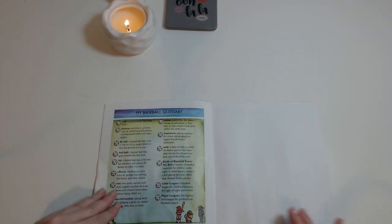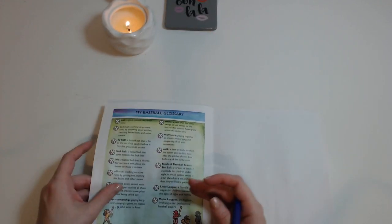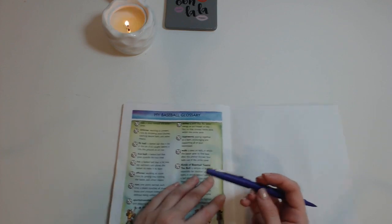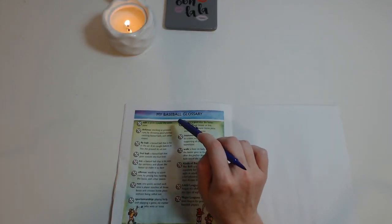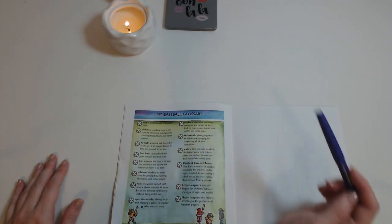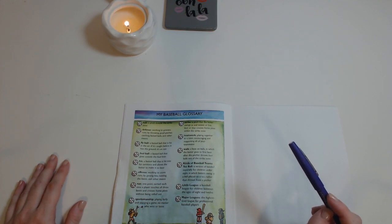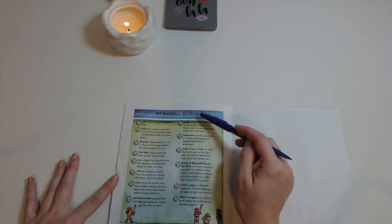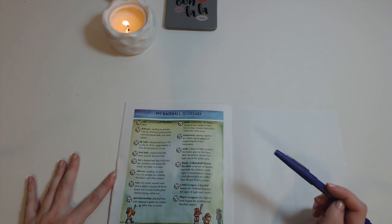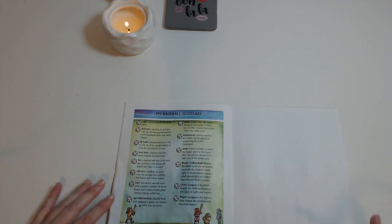That's the end of the text, but in the back we have what's labeled 'My Baseball Glossary.' Remember, a glossary tells the definitions of some of the words found in a text. You can read these words on your own to learn what each of them means.